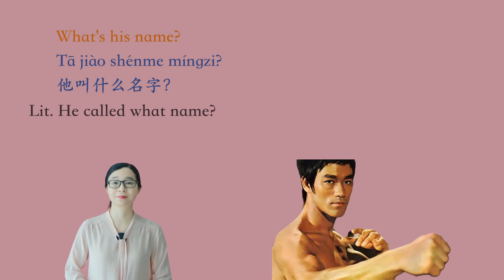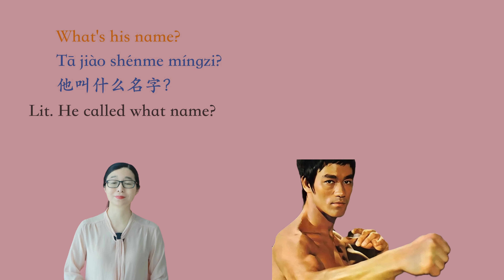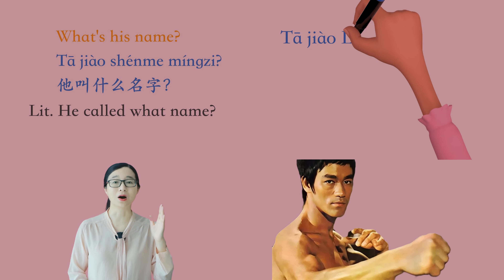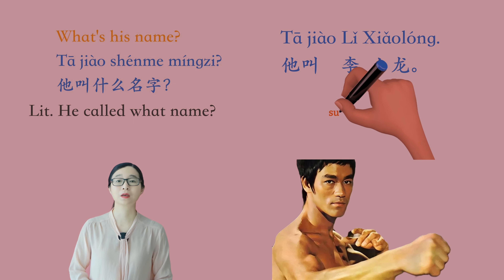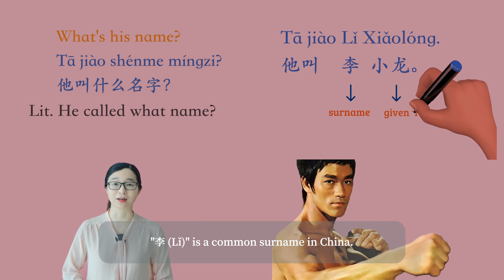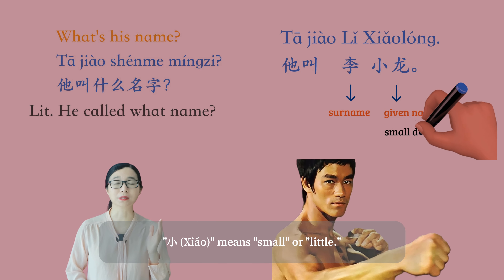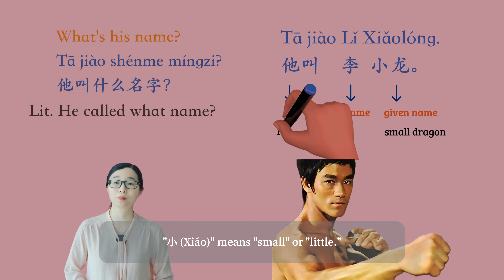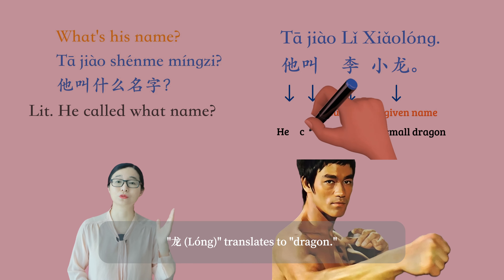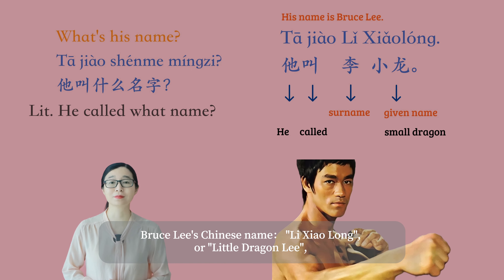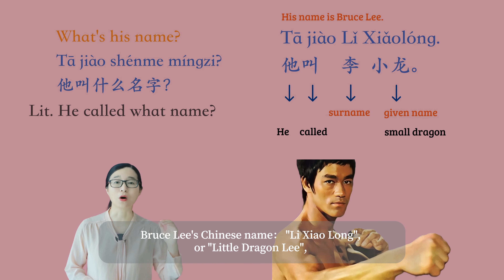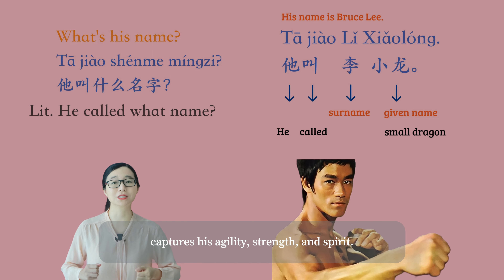Jackie Chan's Chinese name 成龙 evokes the image of a rising or accomplished dragon. 他叫什么名字? What's his name? 他叫李小龙。 李 is a common surname in China. 小 means small or little. 龙 translates to dragon. Bruce Lee's Chinese name 李小龙, or little dragon Li, captures his agility, strength, and spirit.